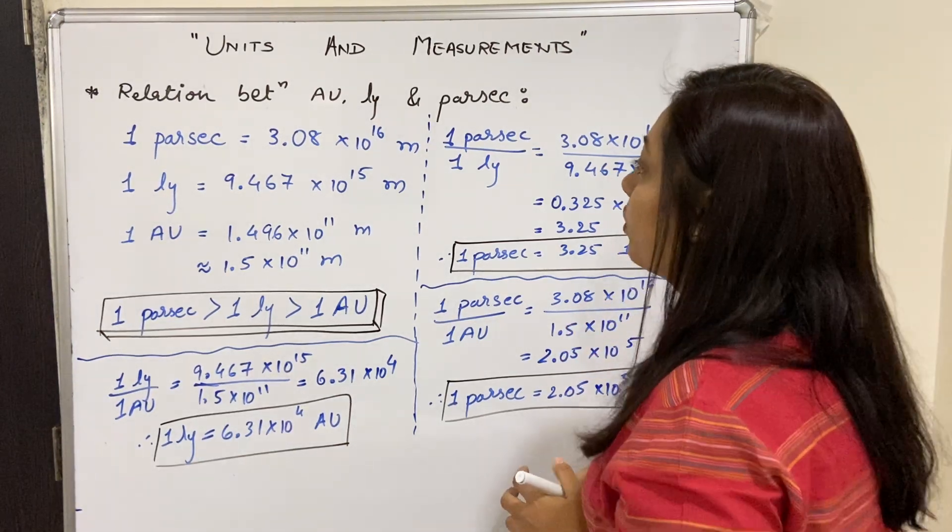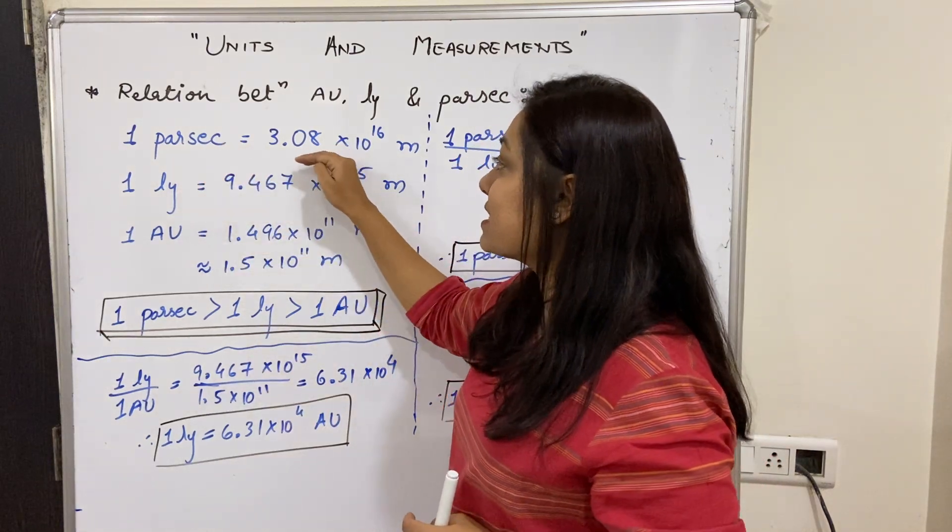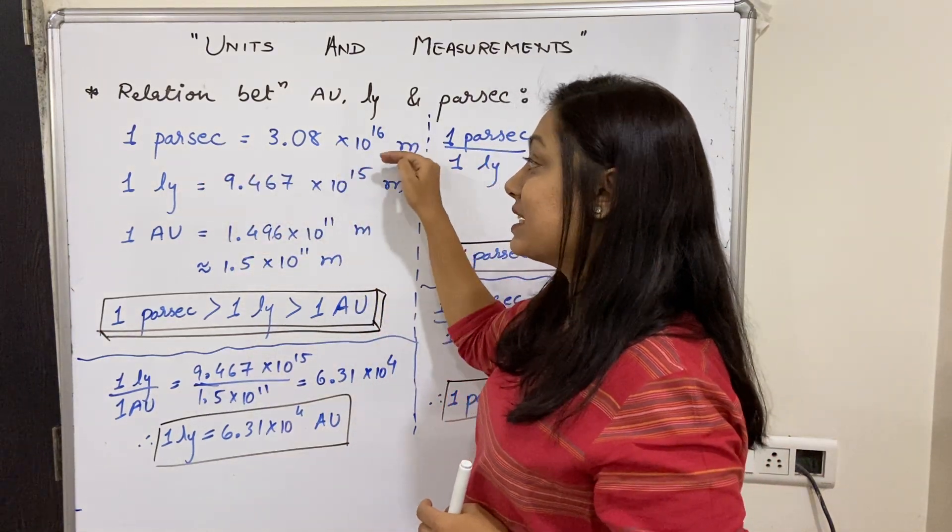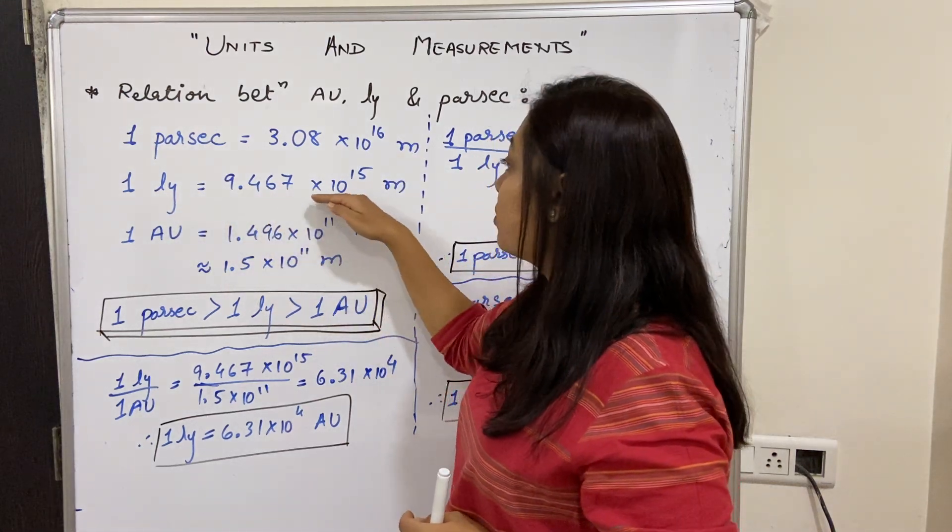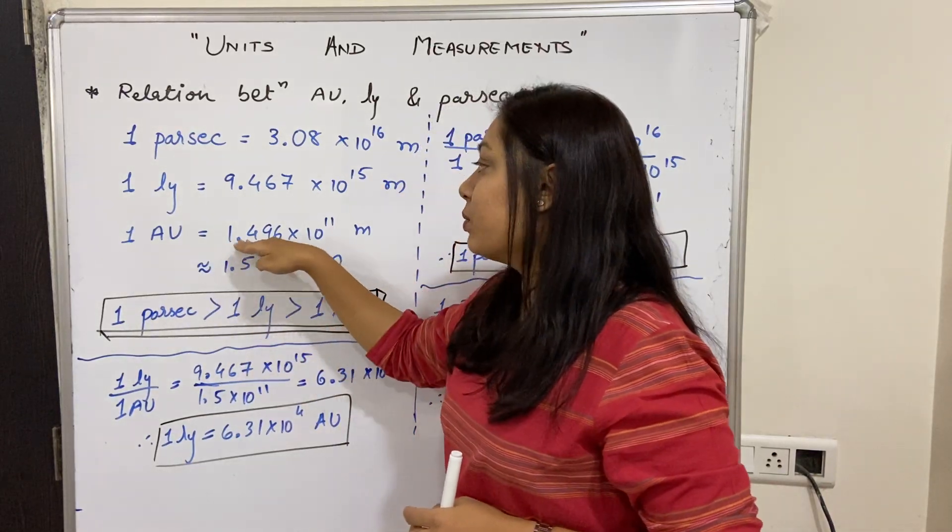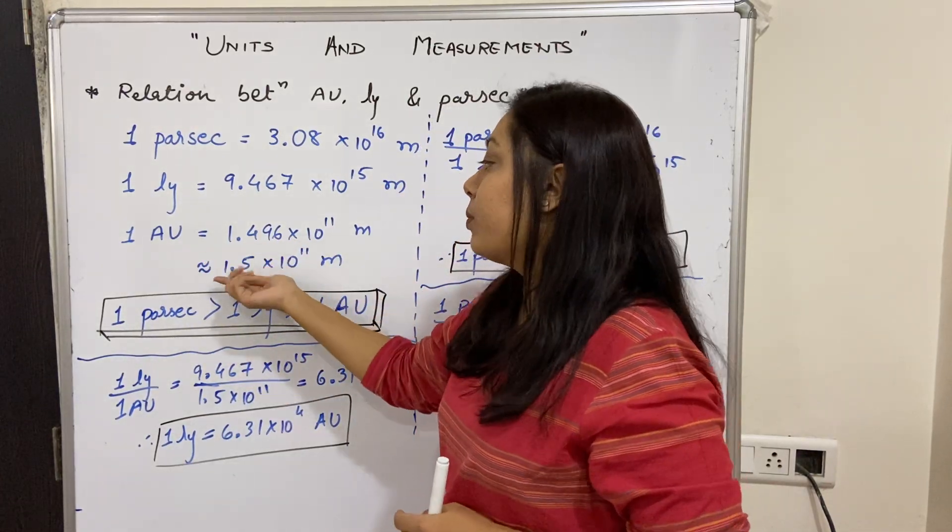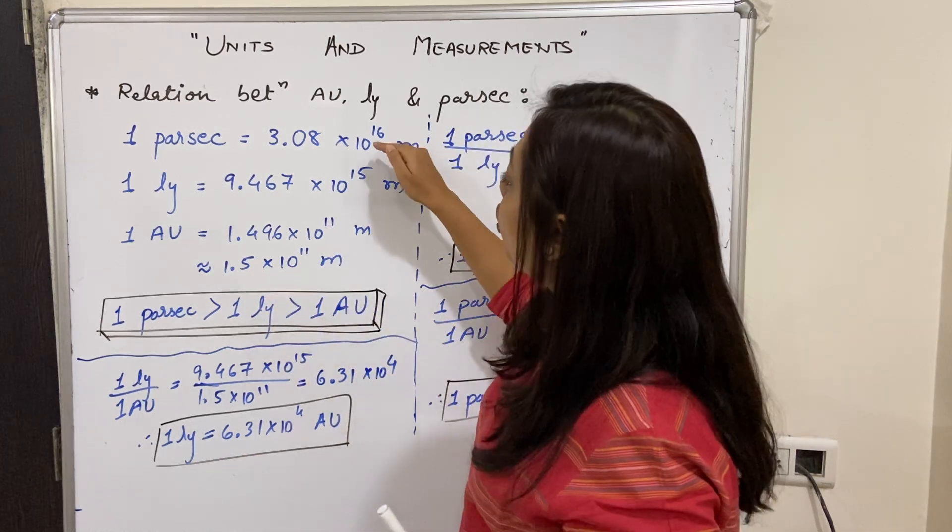This is what we are going to see now. What we have understood in previous videos is: one parsec is 3.08 × 10^16 meters, one light year is equal to 9.467 × 10^15 meters, and one astronomical unit is 1.496 or approximately 1.5 × 10^11 meters.